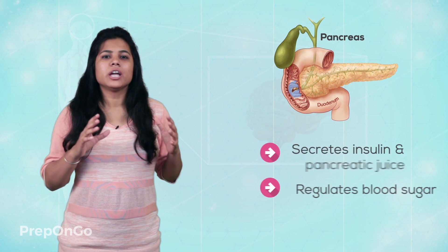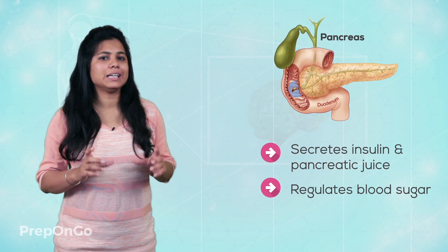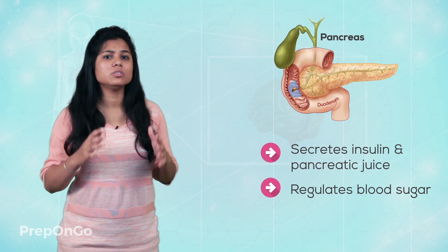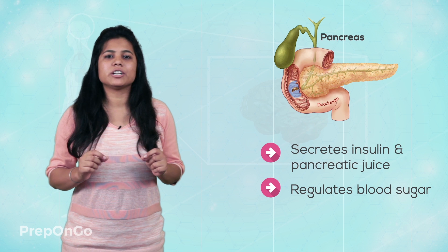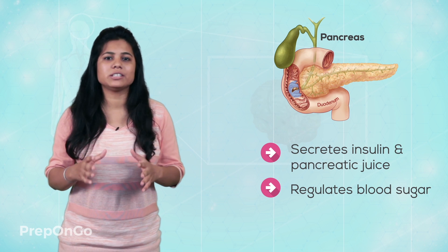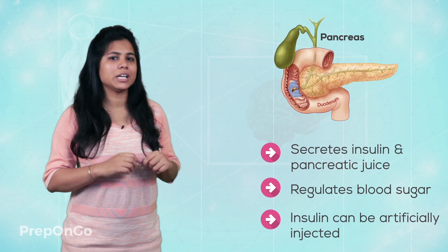You might have heard of diabetic people taking insulin injections. Insulin regulates the sugar level or glucose level of the blood. In the human body, insulin is naturally secreted by the pancreas gland, which is situated a little lower than the adrenal gland. The pancreas not only secretes insulin but also releases pancreatic juice, which is responsible for the digestion process. Insulin is one of those hormones which can be artificially injected into the human body.